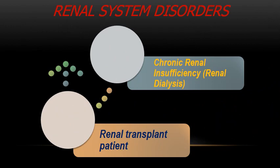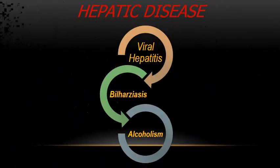In the renal system, we have two major entities: chronic renal insufficiency, renal dialysis patients, and renal transplant patients and patients who had other transplanted organs. When we discuss hepatic disorders, we need to clarify the causes of hepatic failure, among the top of which is viral hepatitis. In warm countries like Egypt and India, we face bilharziasis, and last but not least, alcoholism.